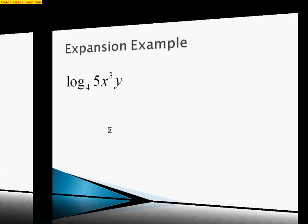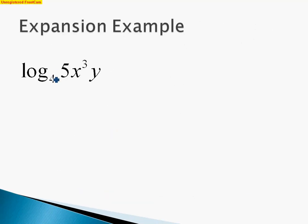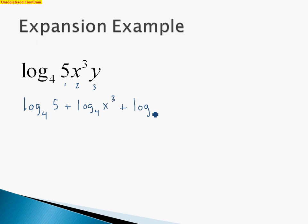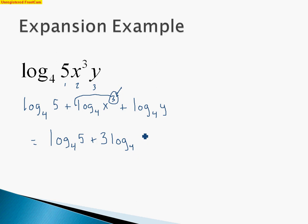Now let's look at an expansion example. We want to expand log base 4 of 5x cubed y to include many logarithms. We notice a multiplication is going on with three things being multiplied: the 5, the x cubed, and the y. So we'll have three logarithms. We get log base 4 of 5 plus log base 4 of x cubed plus log base 4 of y. Checking for powers, the 3 comes down in front, giving our final answer: log base 4 of 5 plus 3 log base 4 of x plus log base 4 of y.